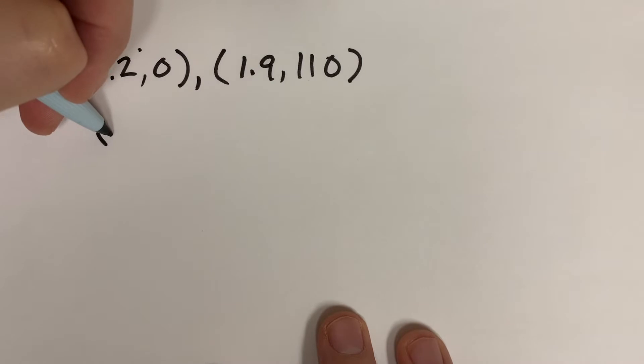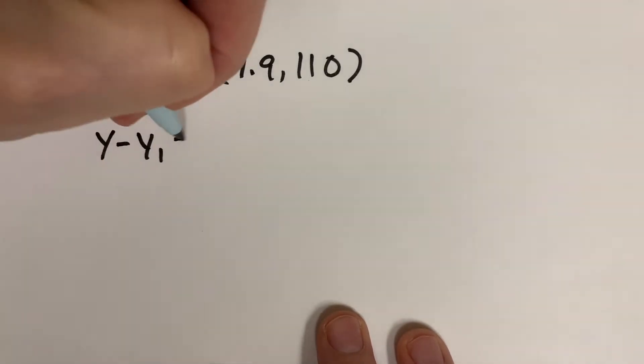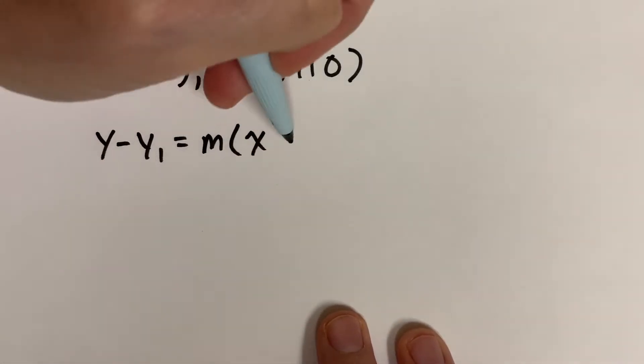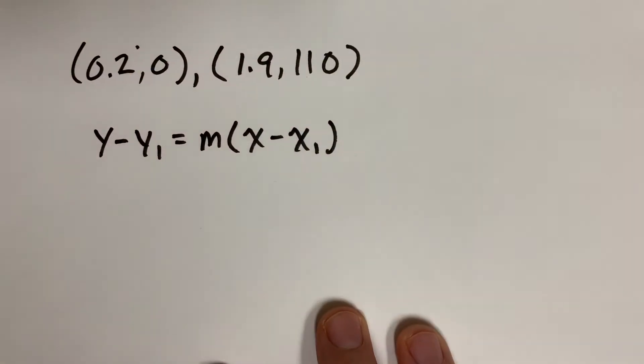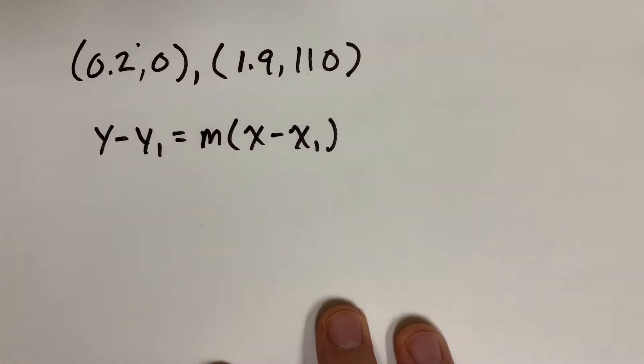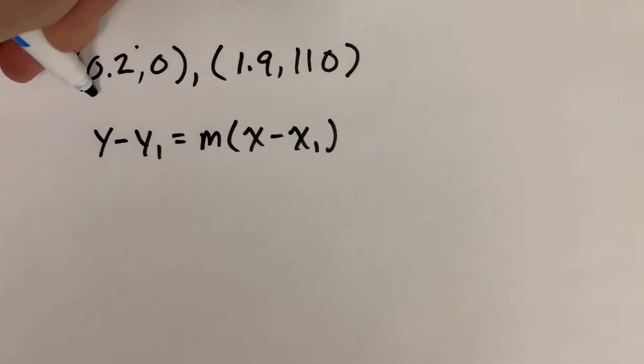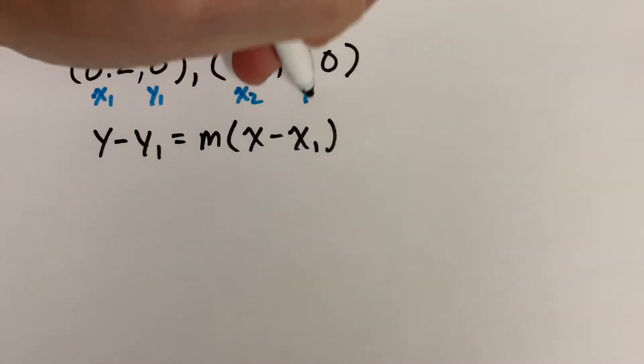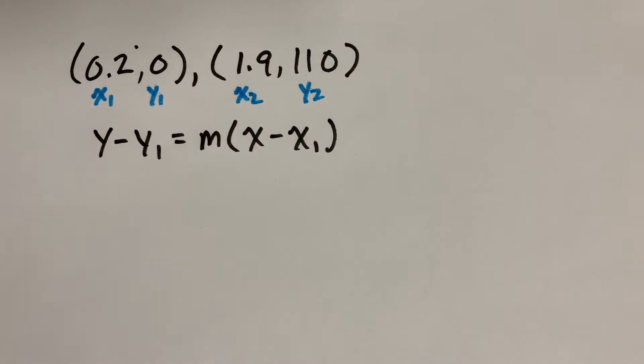Here we go: y minus y1 equals m times x minus x1. Here is, let me label those in a different color: x1, y1, x2, y2. So I also need the slope, don't I?